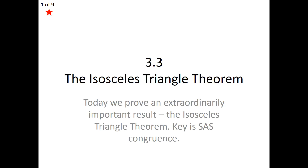Now that we have the ability to prove two triangles are congruent with the Side Angle Side congruence postulate, this is going to carry us into our next theorem, our Isosceles Triangle Theorem. It's all thanks to this property of congruence, because with congruence we take three pieces of information and through congruence we can turn it into six using CPCTC.